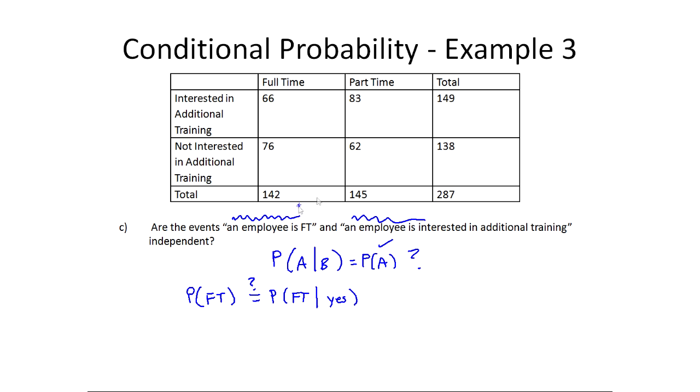Okay, probability of full-time, there are 142, so we're looking down here, 142 full-time employees out of the 287. So we want to know, does this equal, and now full-time given yes, so the known event is yes, they're interested, so I'm looking at this group right here, they're interested. And so that would be a total of 149. And how many of them are full-time? It's 66. So the question is, do these two equal 100% or not, and they do not if you check in your calculator. So these are not equal. So I would say the events are dependent.